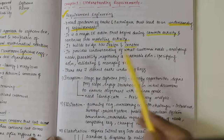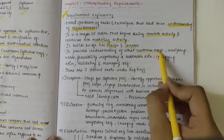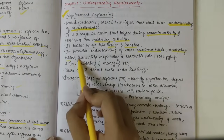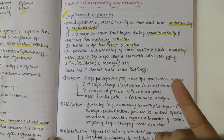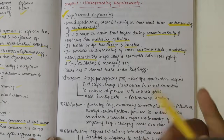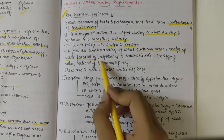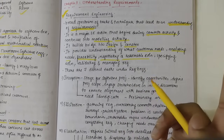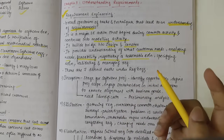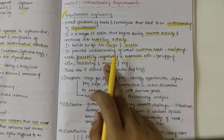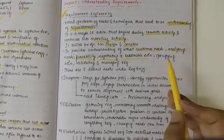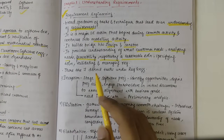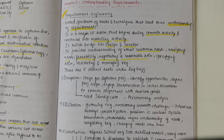Requirement Engineering provides understanding of what customer needs are, analyzing their needs and feasibility — is it logically possible? Then negotiating a reasonable solution. Negotiation also plays an important role while understanding the requirements. Then specifying the solution, validating and managing the requirements.